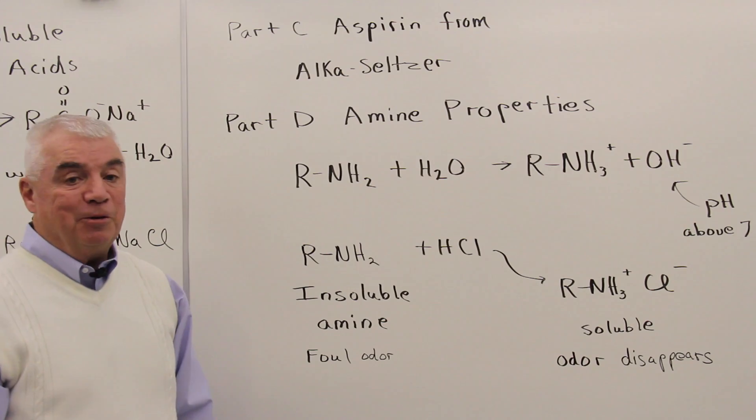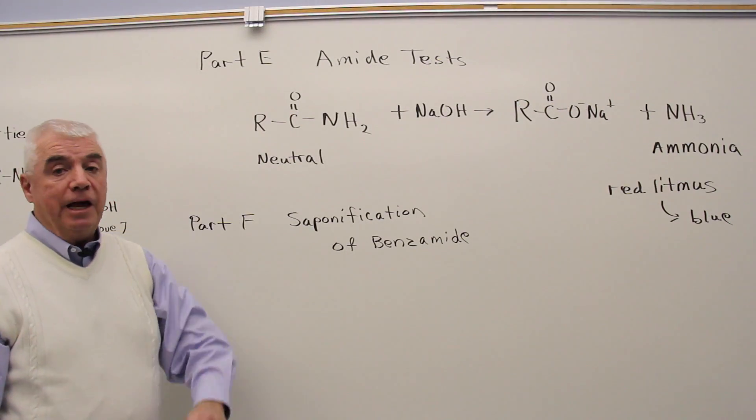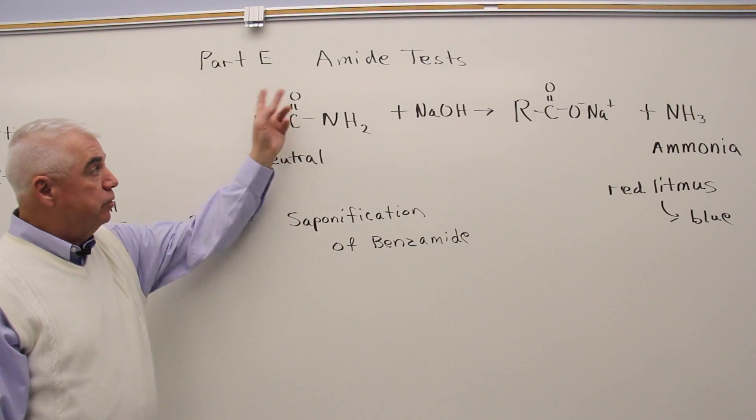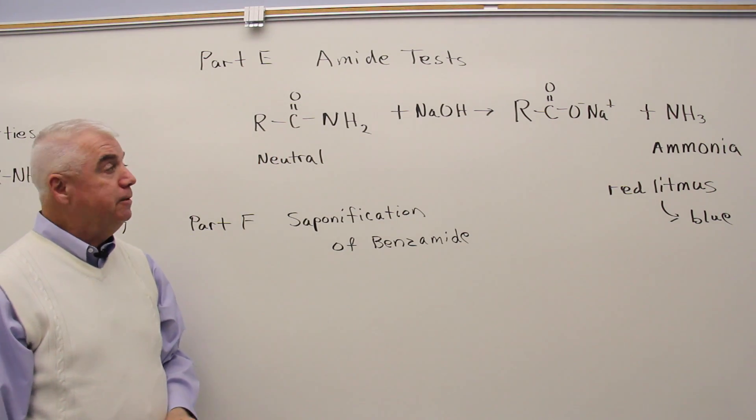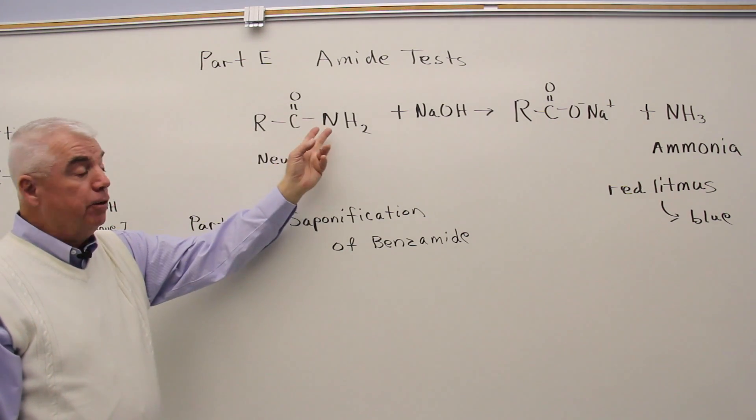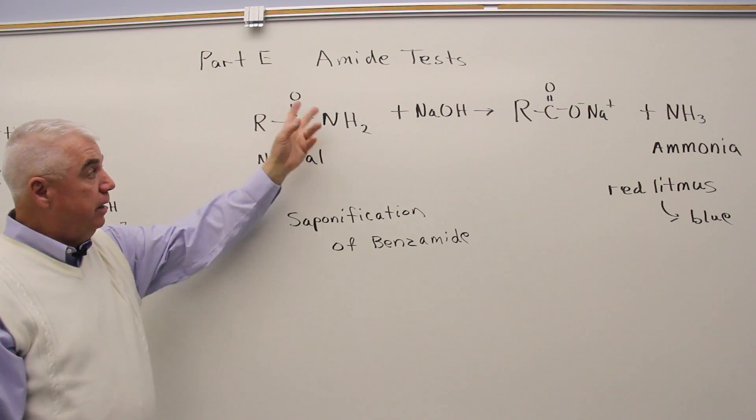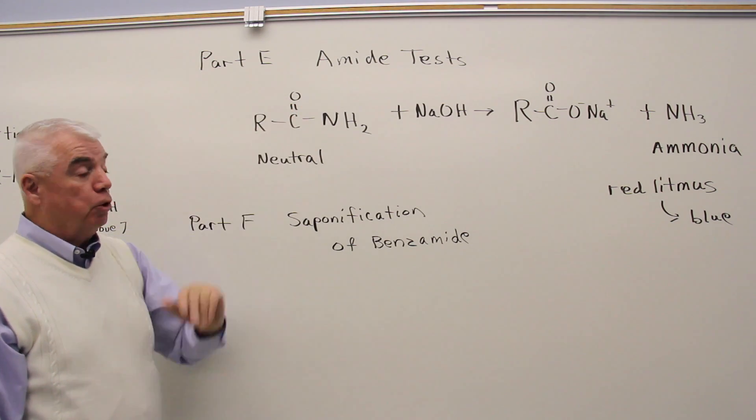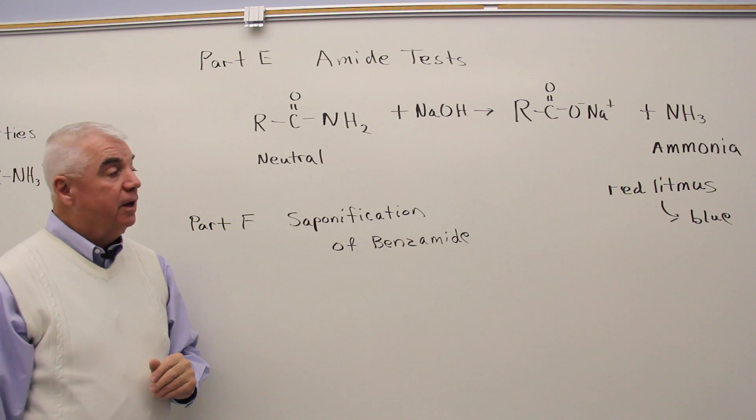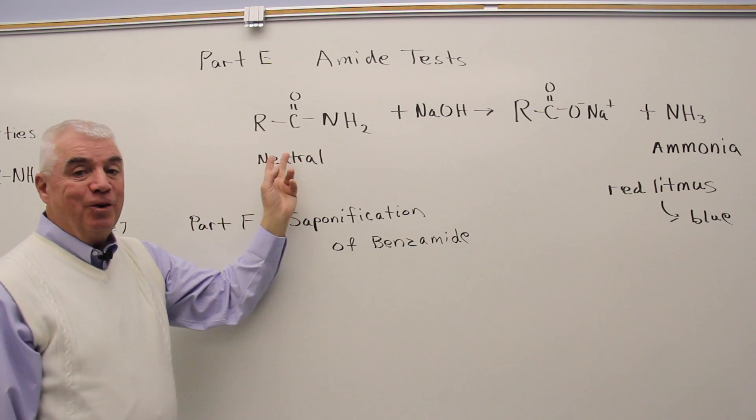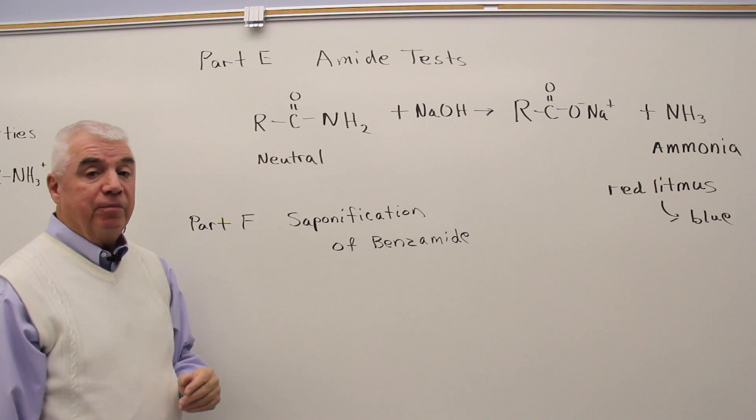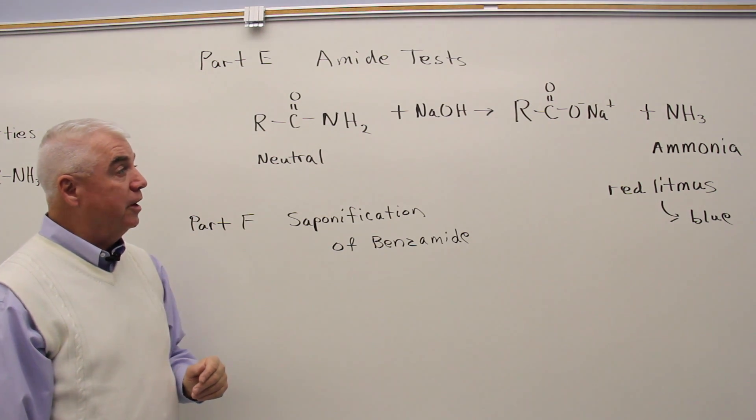Let's look at Part E and F. In Part E you'll look at amide tests. Here's the general formula for an amide. Amides, even though they have that nitrogen, aren't organic bases. They're not acidic. Amides are neutral compounds. So in that way you can separate them from amines and carboxylic acids.